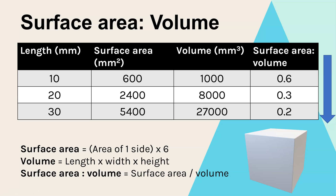The pattern here is that the larger the cube, the smaller the ratio. In terms of biology, the bigger an organ or organism is, the smaller its surfaces are compared to its volume. That means it won't be able to get enough exchange of substances happening to meet its needs, so larger organisms will need to have special exchange surface adaptations or organs.